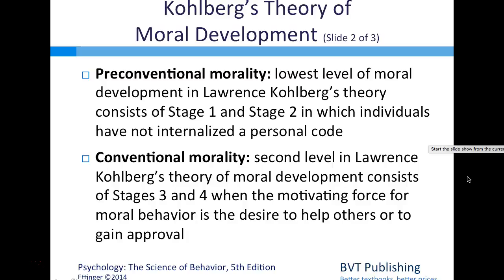Pre-conventional morality is the lowest level in Kohlberg's theory, consisting of stages one and two, in which individuals have not internalized a personal moral code. Conventional morality is the second level, consisting of stages three and four, where the motivating force for moral behavior is the desire to help others or to gain approval.